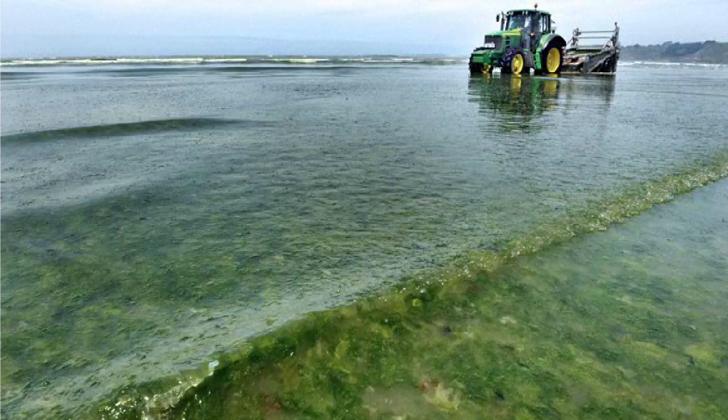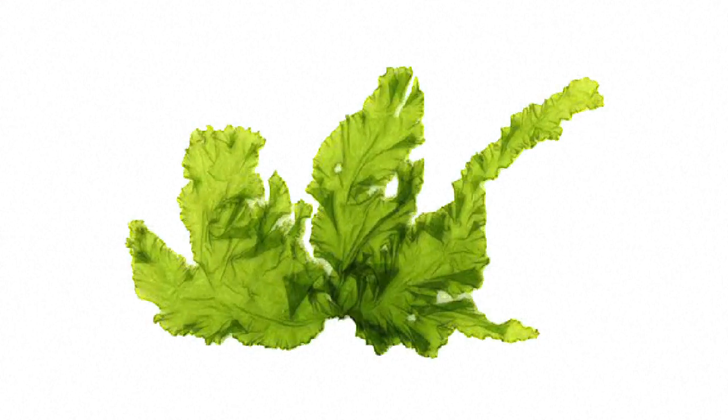Green tides can develop when a type of algae called ulva, also known as sea lettuce, spreads rapidly.